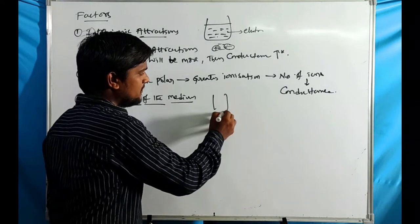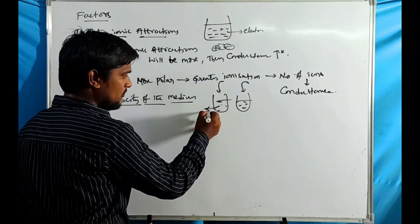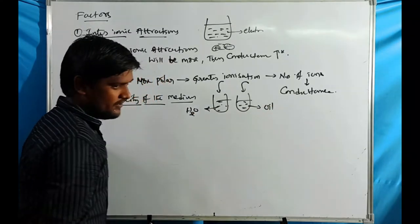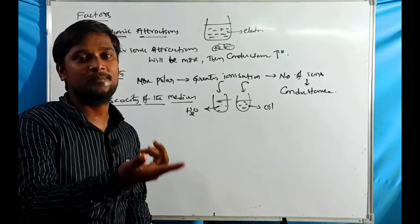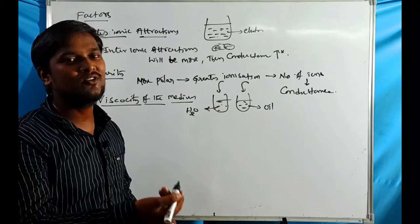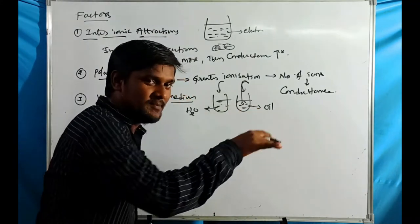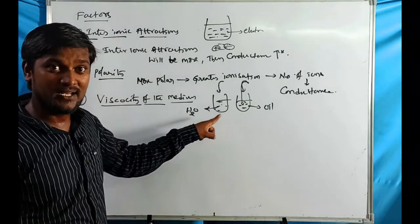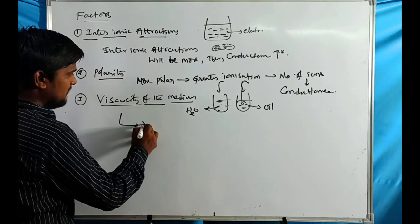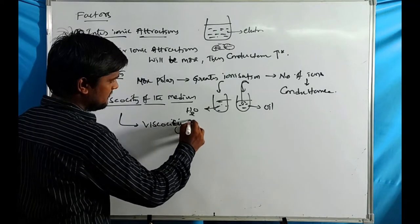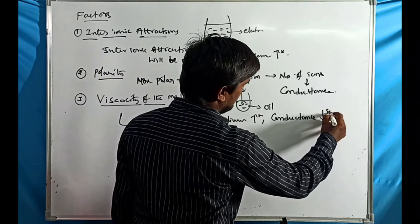The third factor is viscosity of the medium. Imagine dropping a coin into water versus oil — in oil (more viscous), the coin sinks more slowly. Viscosity hinders the flow of ions. Therefore, if viscosity of the medium increases, conductance decreases.